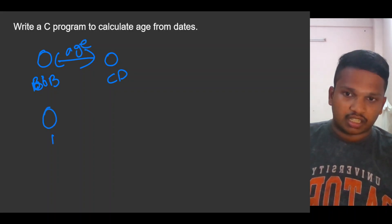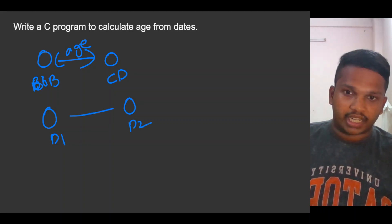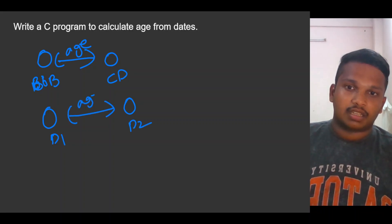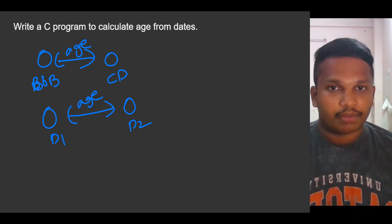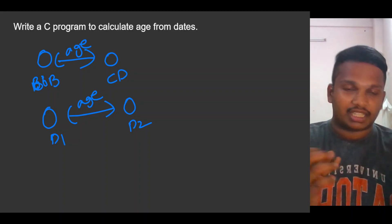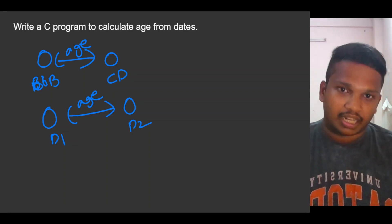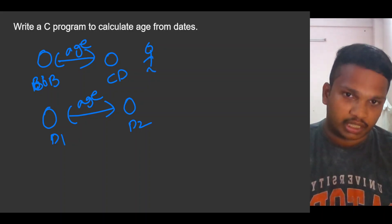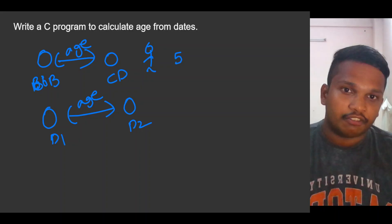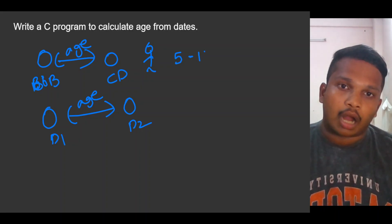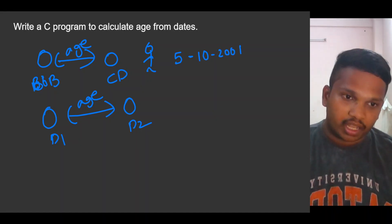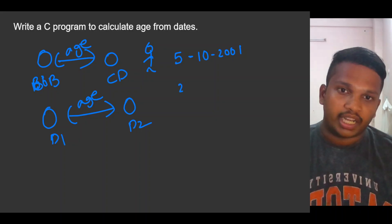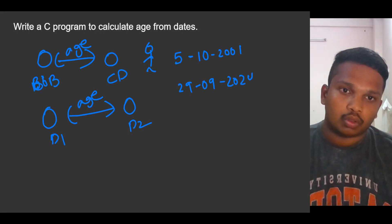This question can also be asked like: we will be given with two dates, calculate the age. Consider a person like Ramu — his date of birth is 5th October 2001, and today the current date is 29/09/2024.